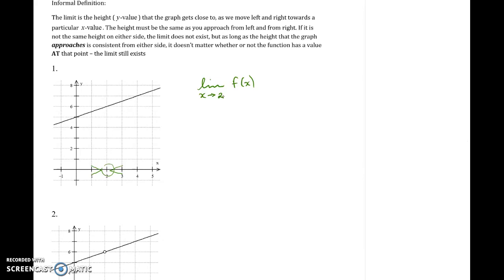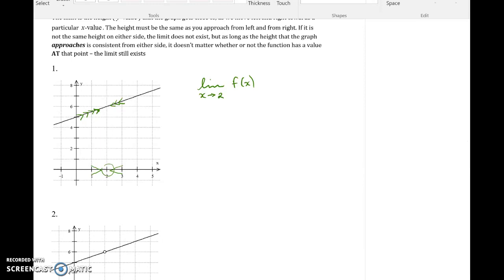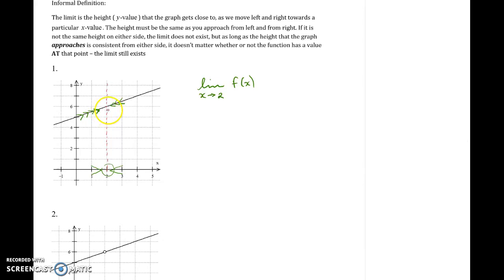Now this is a very easy example. If we follow the graph along and we make our x get closer and closer to 2, then the limit is just the height that the graph appears to be getting closer and closer to as we move closer and closer to an x value of 2. So if you look at this vertical line through x equals 2, what height do you expect the graph to be at when it reaches this red dotted line? It should be fairly clear that you would expect the height to be 6. So we say that the limit of f of x as x approaches 2 is equal to 6.